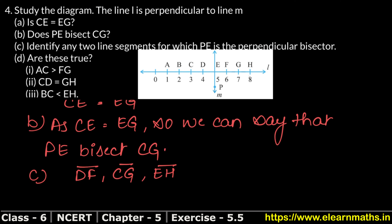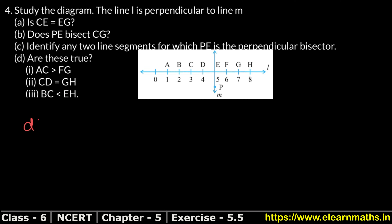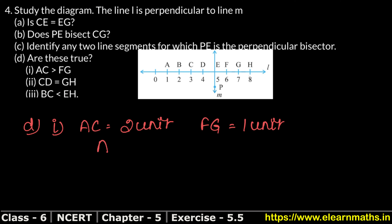Now let's do part d: Are these statements true? First part — is AC greater than FG? AC is from A to C, which is 2 units, and FG is 1 unit. Obviously 2 units is greater than 1 unit. So we can write: AC is 2 units.